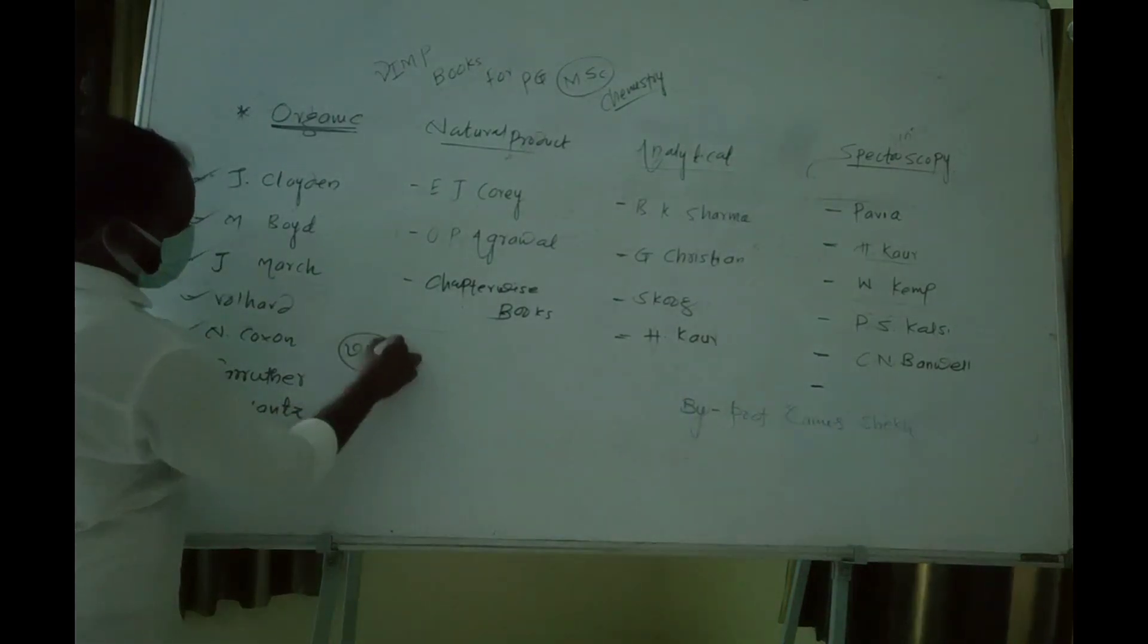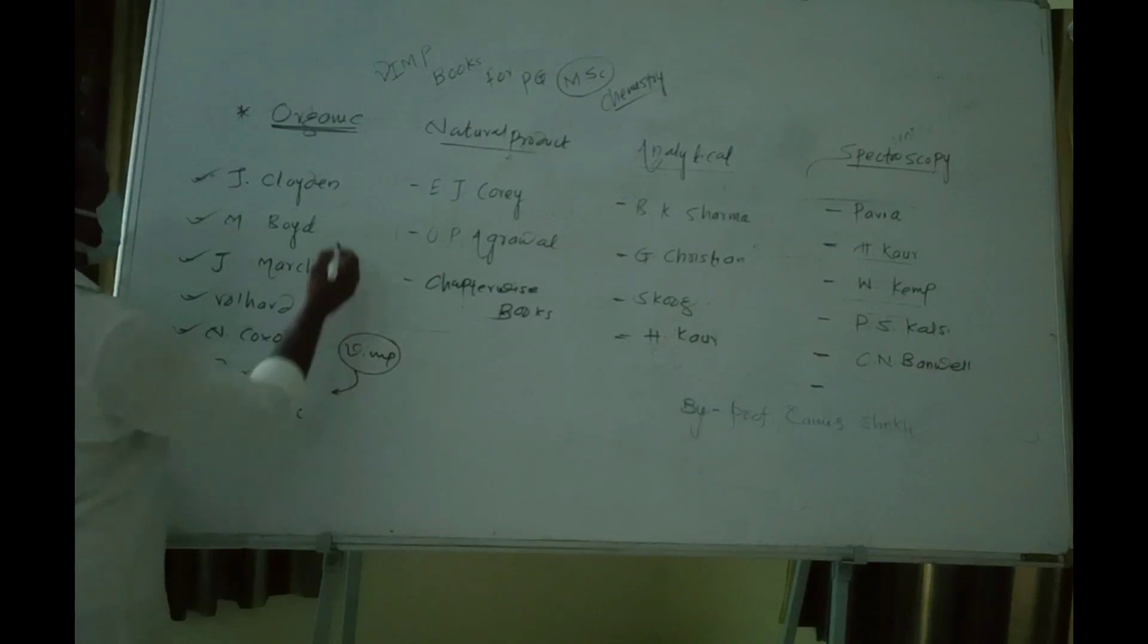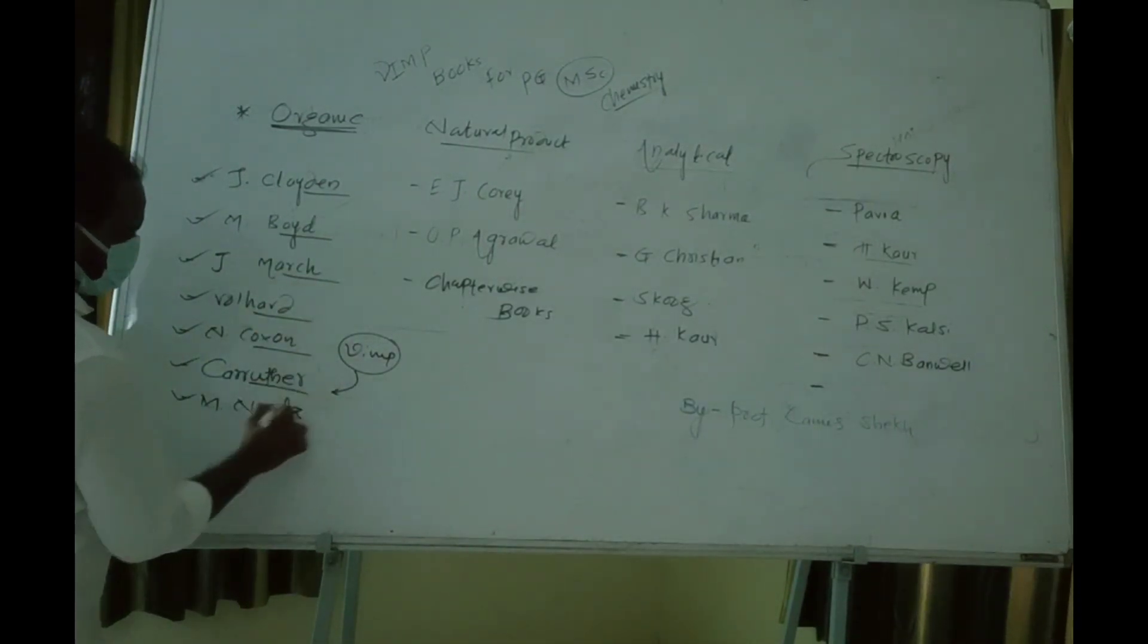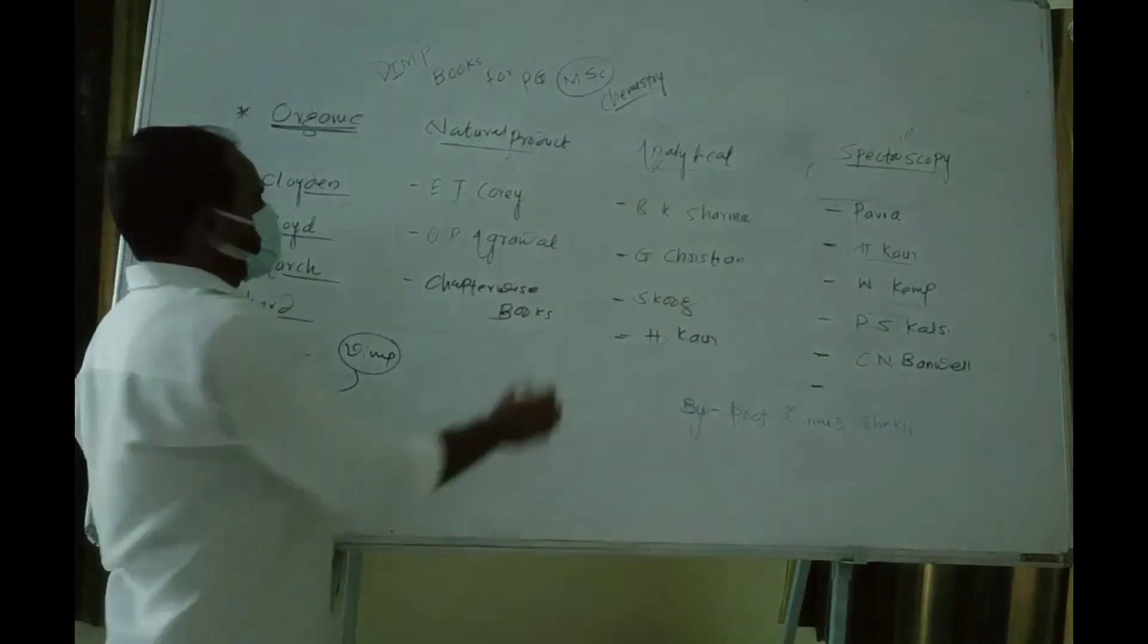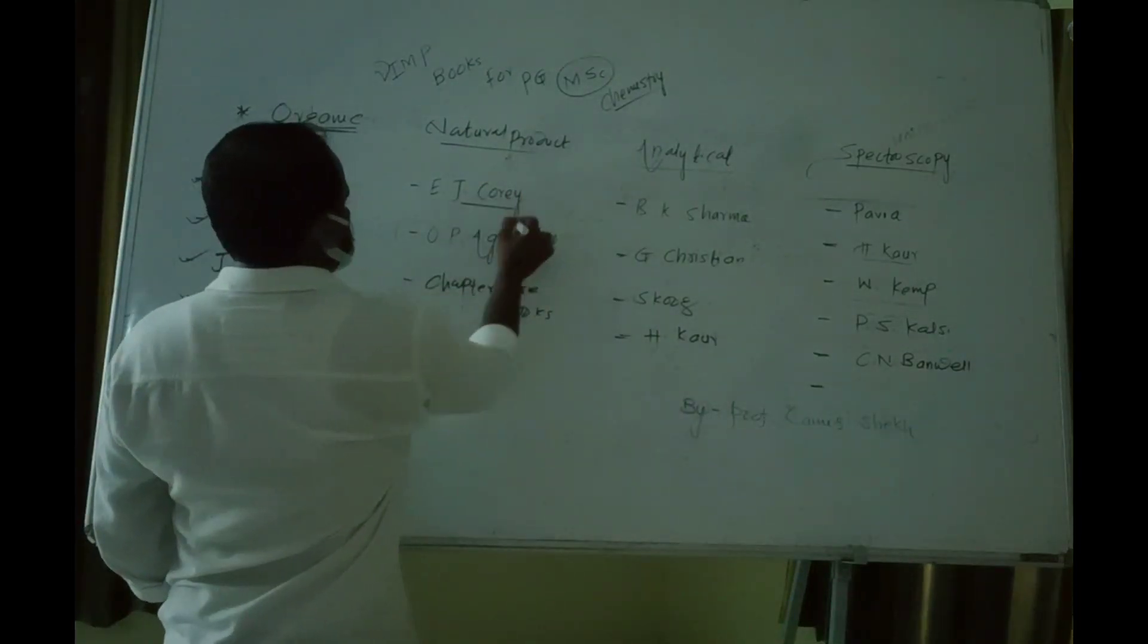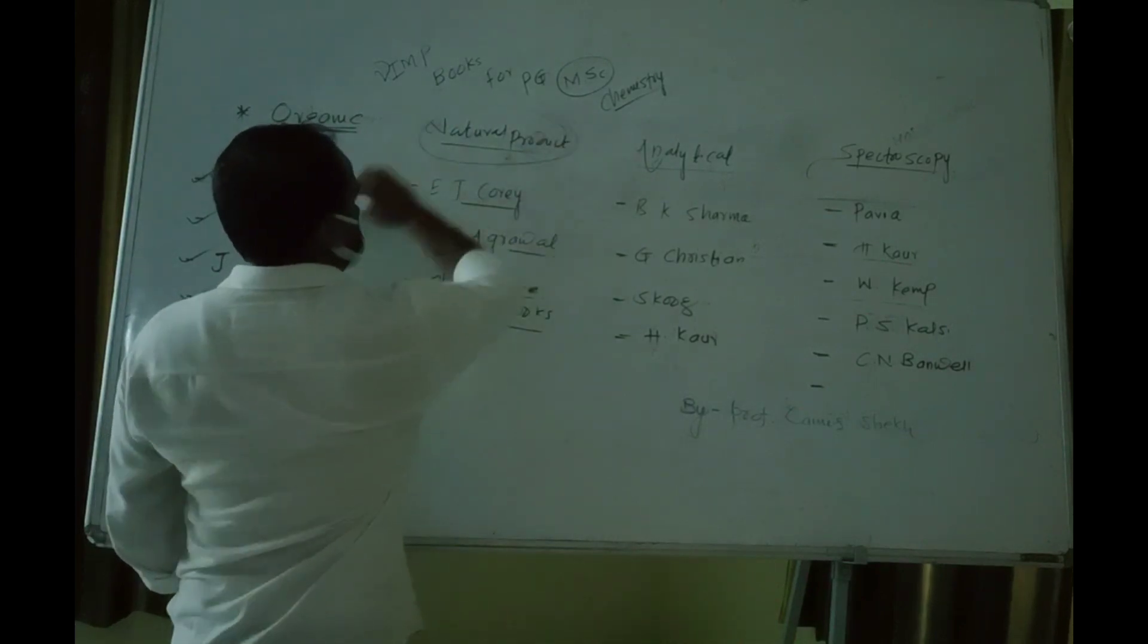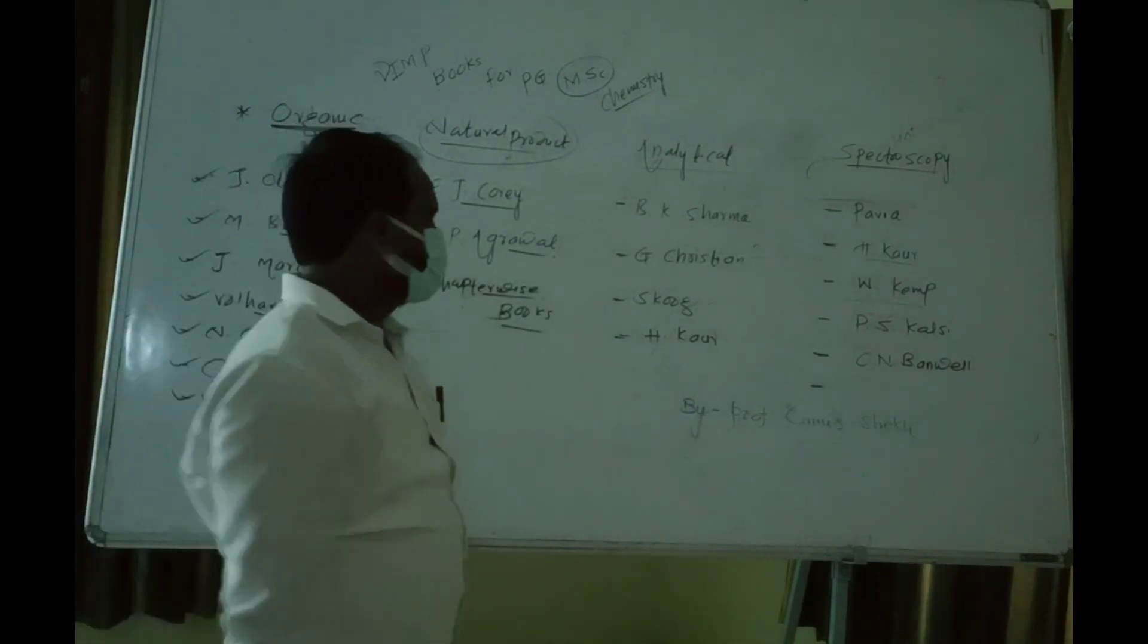These are essential books particularly for organic chemistry, from basic level to modern synthesis for natural products. We have Alias James Corey book, Agarwal, and lastly the chapter-wise books.